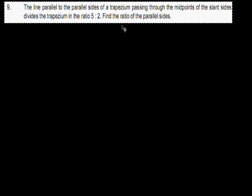Question 9: A line parallel to the parallel sides of a trapezium, passing through the midpoints of the slant sides, divides the trapezium in the ratio 5:2. Find the ratio of the parallel sides.